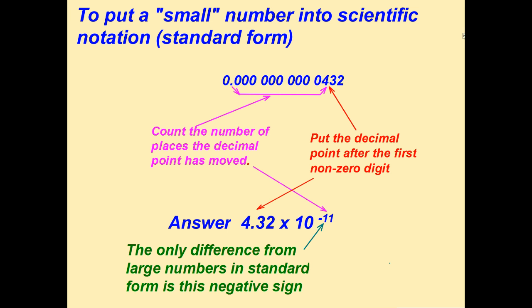To put a small number into standard form or scientific notation, the first number has to be between 1 and 10, so you put the decimal point after the first non-zero digit. For example, 4.32.